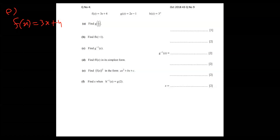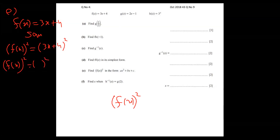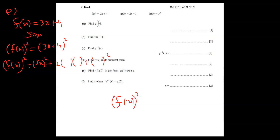Part e: f of x has a whole square. Copy the function, then square both sides. Applying the square identity — first term squared plus two times first term times second term plus second term squared — 3x comes in as the first term and 4 as the second term. So 9x squared, then two times 3x times 4 gives 24x.